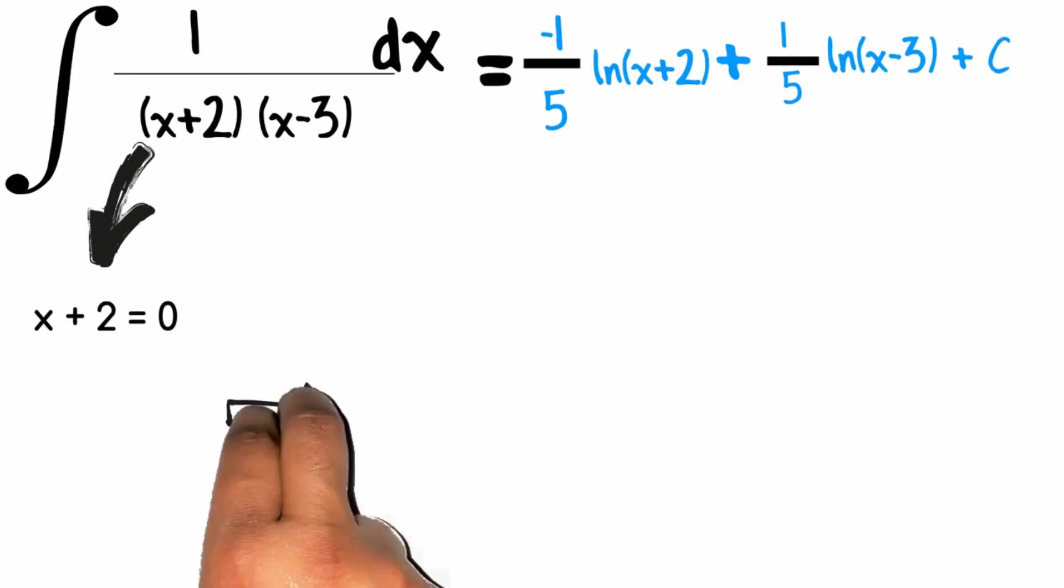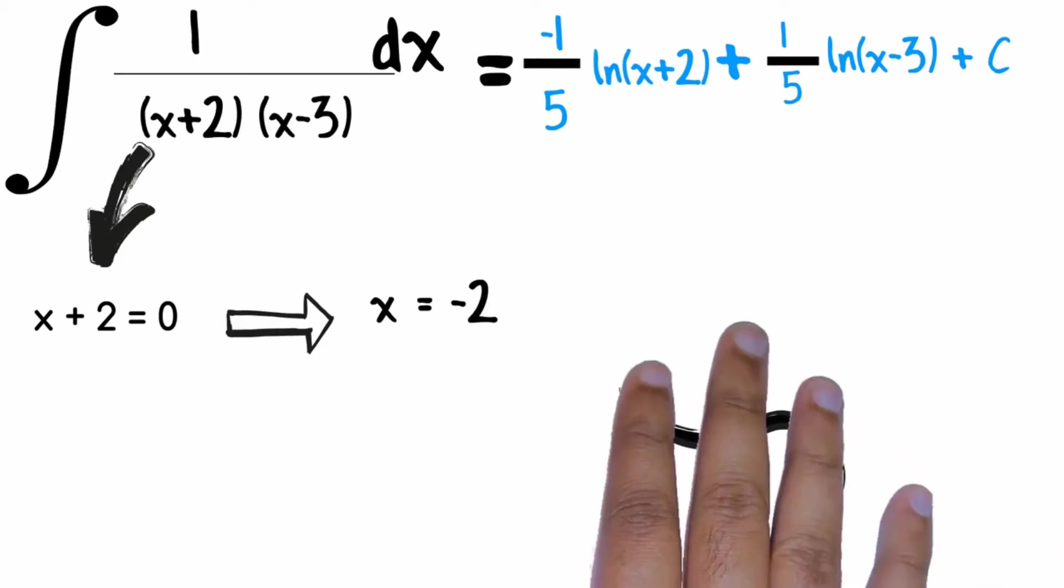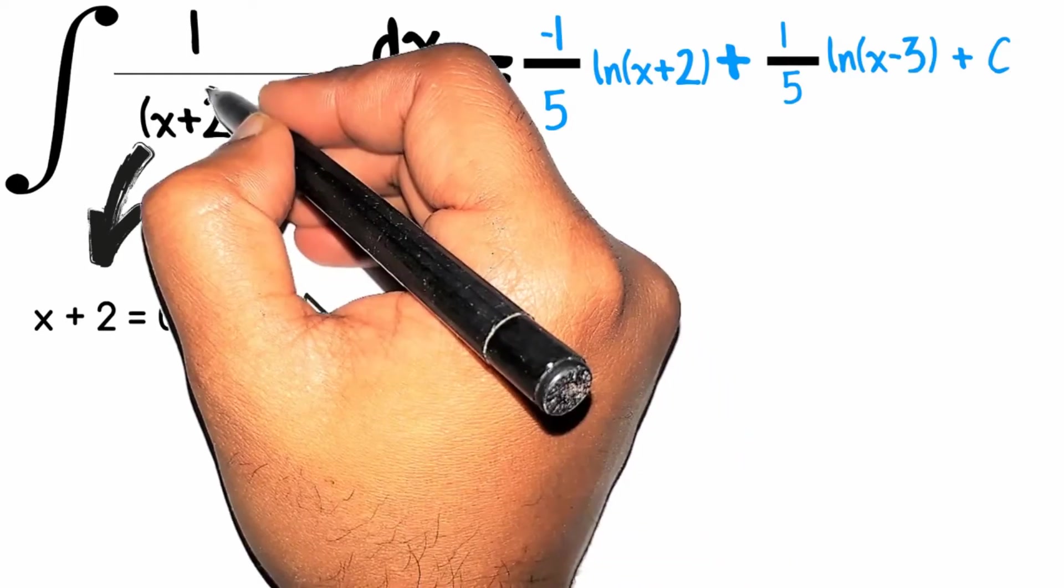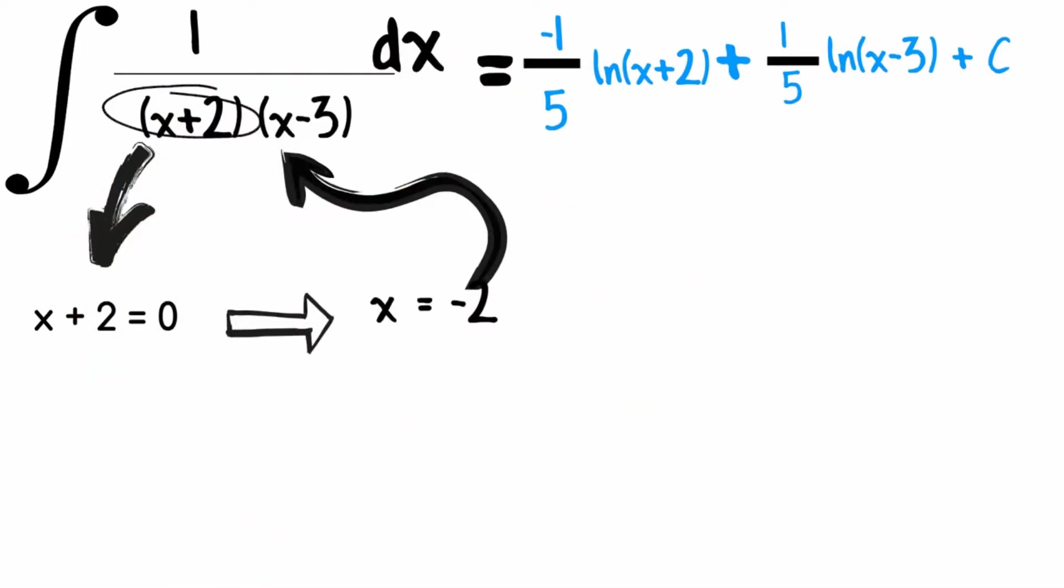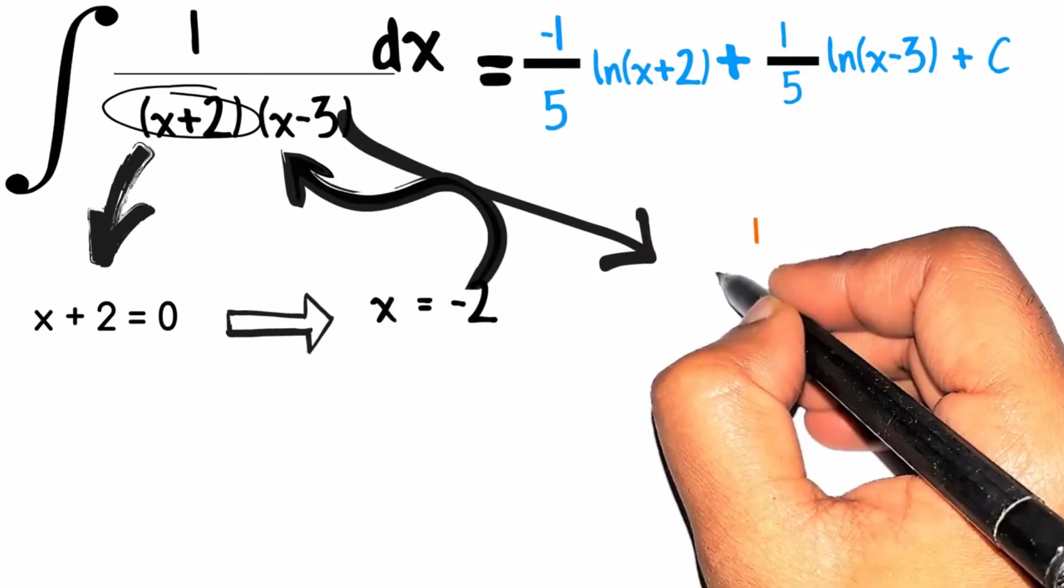First we need to take the first factor which is x plus 2 and put it equals to 0. Solving for x will give us x equals to minus 2. So we will put x equals to minus 2 in the original question leaving the factor for which we were solving because it will make the answer equal to 0. So solving for x will give us minus 1 by 5.